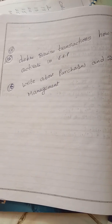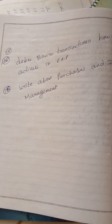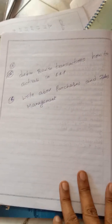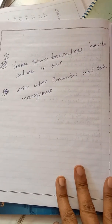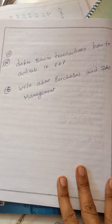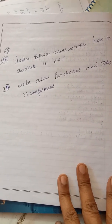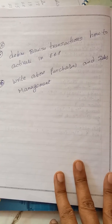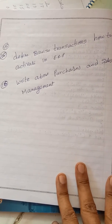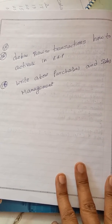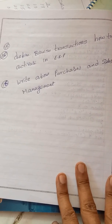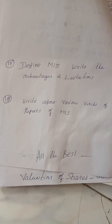Questions 15 and 16: how to activate bill-wise transactions in Tally ERP, write about purchases and sales management, link accounts receivable and accounts payable. The 15th question is how to create a new reference.